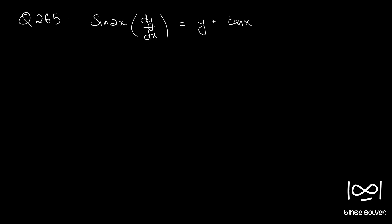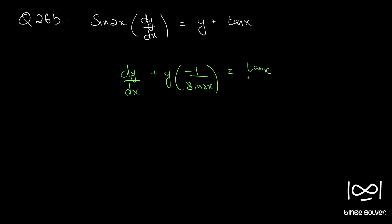Question number 265. The equation is sin2x · dy/dx = y + tanx. If you divide the differential equation throughout by sin2x and do some rearrangement, we get dy/dx minus y · (1/sin2x) equal to sinx/sin2x.